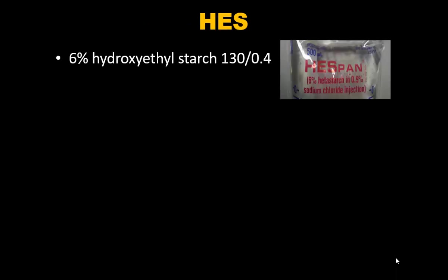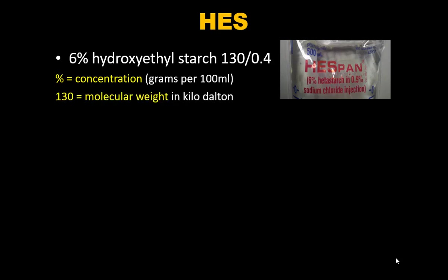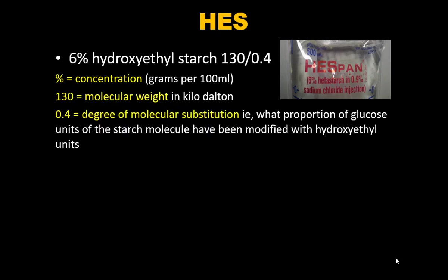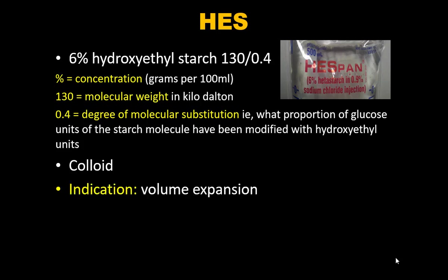HES — Hetastarch or Hydroxyethyl Starch — is 6% HES 130/0.4. The 6% denotes concentration (g/100 mL), 130 is the molecular weight in kilodaltons, and 0.4 is the degree of molar substitution. HES is a colloid used for volume expansion but is seldom used in the ICU these days. The surviving sepsis campaign document has a strong recommendation against HES.